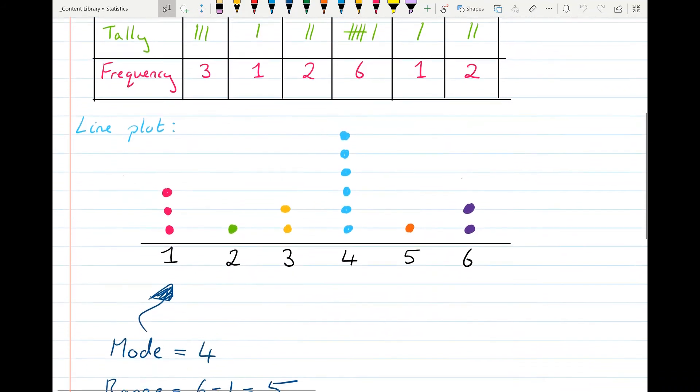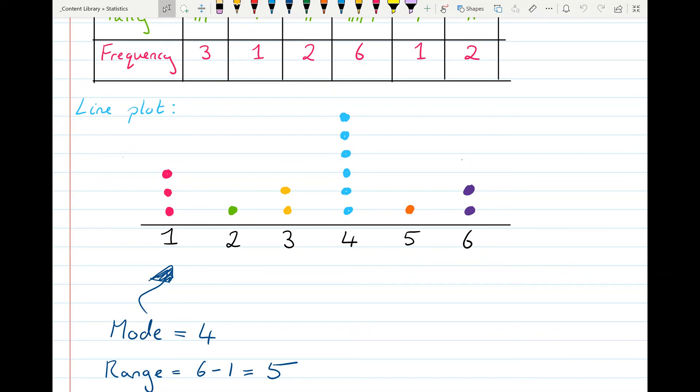From the line plot then we can read off the mode quite quickly. The mode is whichever number appeared most often so that'll be the number four, and the range is our largest value take away our smallest value, so six take away one, so the range is five.